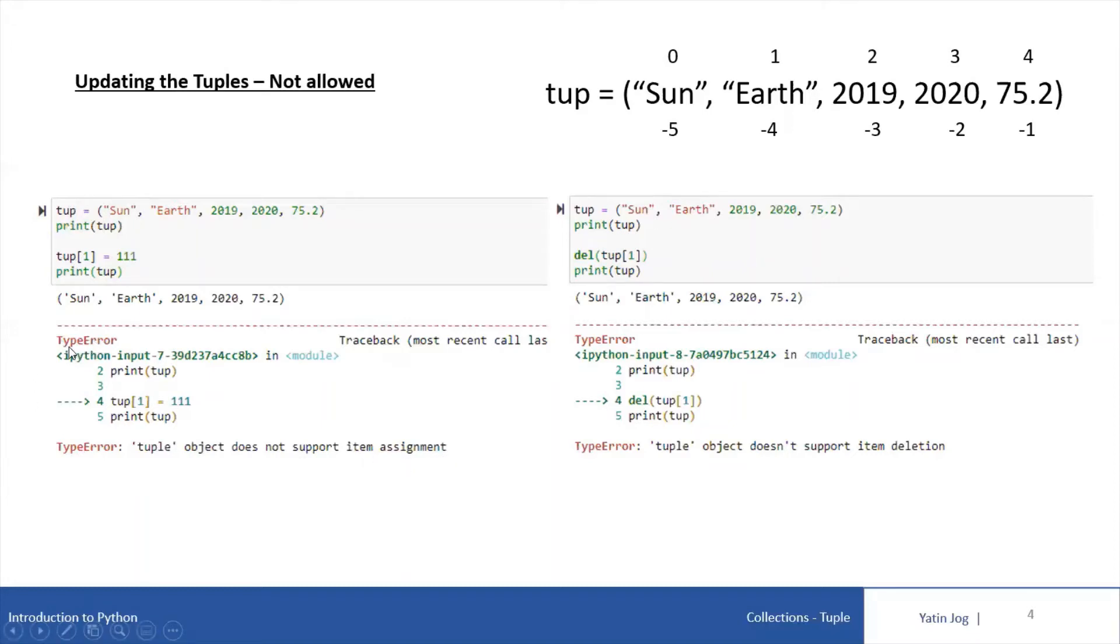So the Python interpreter is going to give us a type error: Tuple object does not support item assignment. Item assignment is not supported by tuple object. That means we cannot use assignment, we cannot use equal to, we cannot modify the existing tuple elements.